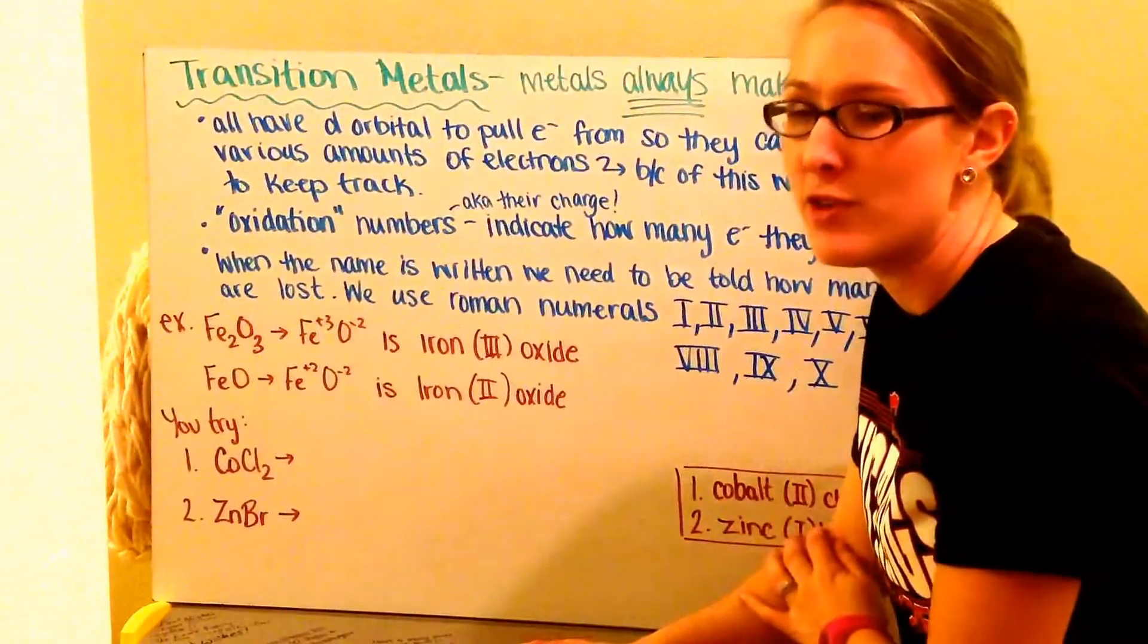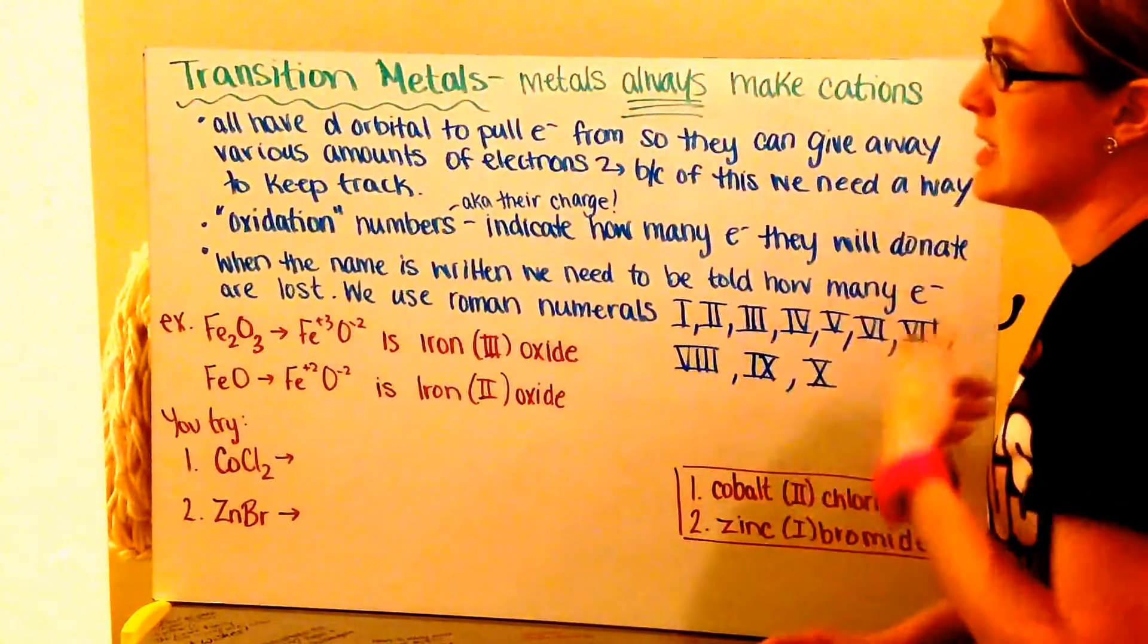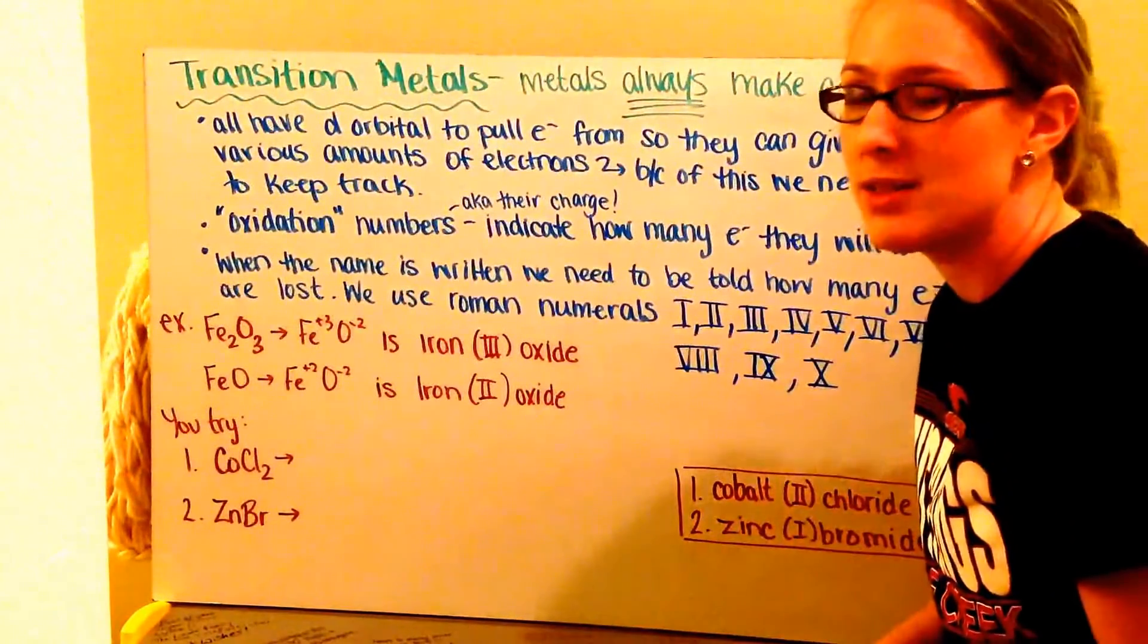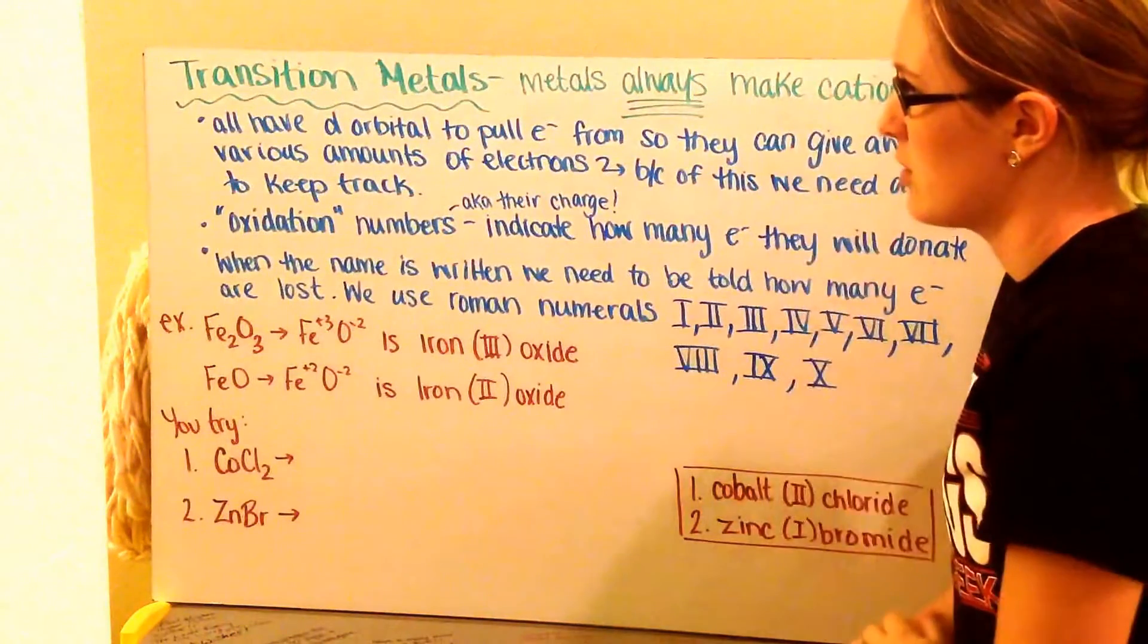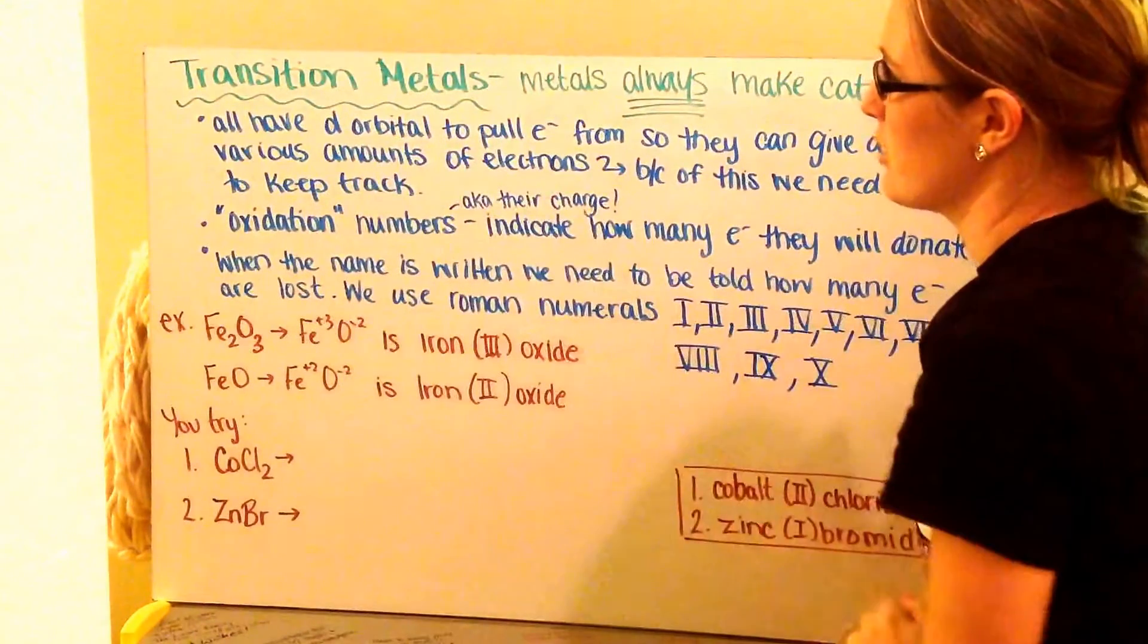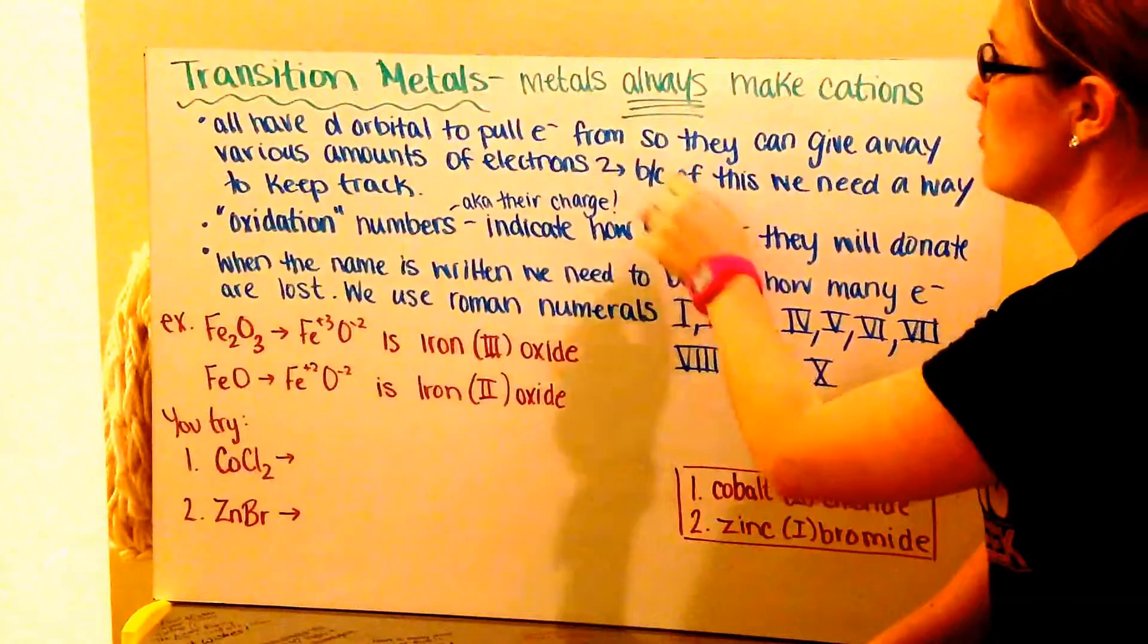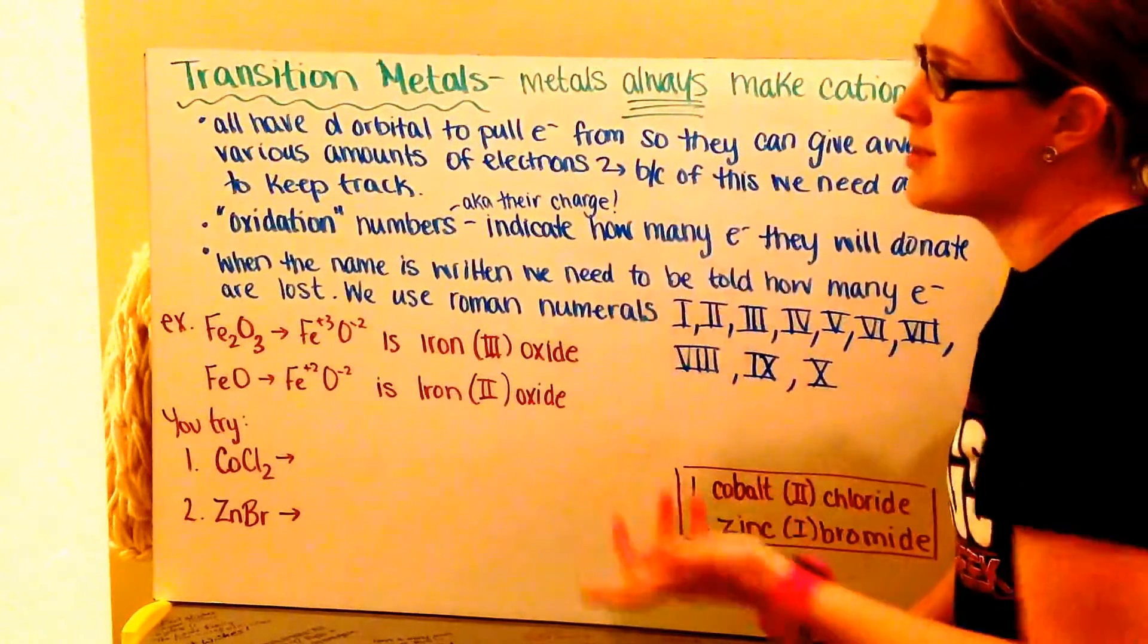Those are your D block of your periodic table. These metals will always make cations because metals want to lose their valence electrons. They become positively charged. So all my transition metals have D orbitals with electrons in them.